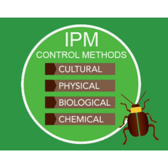There are four types of IPM methods: cultural, physical, biological, and chemical. When we follow the first three methods instead of chemical, we will be very successful in our gardening or vegetable production.